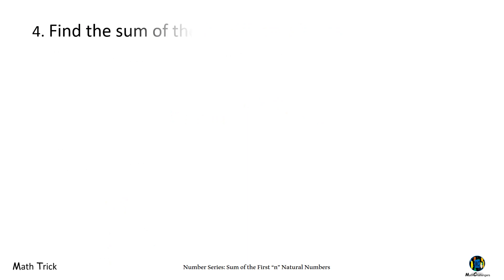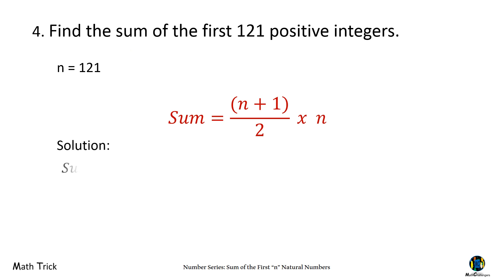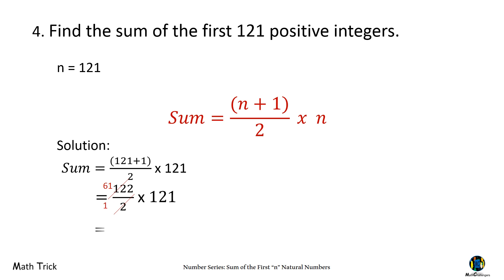Find the sum of the first 121 positive integers. The number of terms is 121. If N is an odd number, we find the sum using the formula: S equals the quantity N plus 1 over 2, times N. Substituting: (121 plus 1) over 2 times 121. 121 plus 1 is 122. 122 over 2 is 61. 61 times 121 is 7,381. The sum of the first 121 positive integers is 7,381.